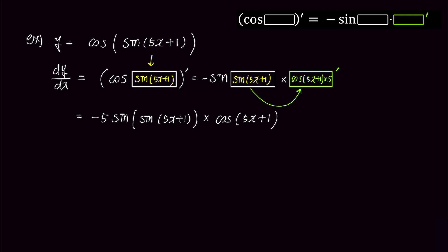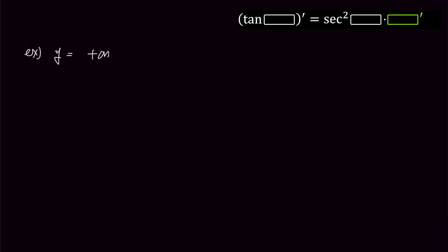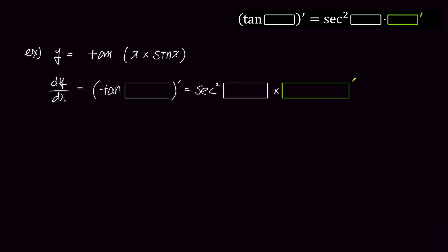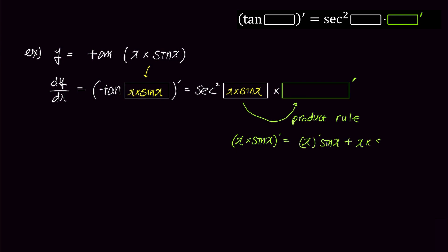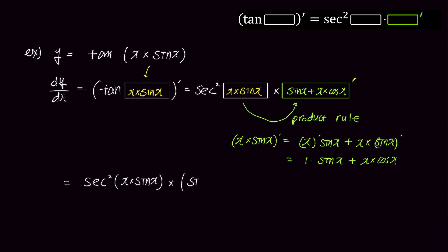In the next problem, we'll use the product rule in combination to find the solution. Let's differentiate y equals tangent of x times sin x. Since we have x times sin x inside the tangent function, we'll use the product rule. We'll put x times sin x into the box and also into the right box for secant squared. Now we need to differentiate x times sin x and put it into the box prime. Since we have two terms multiplied together, we use the product rule: the derivative of x times sin x is x prime times sin x plus x times sin x prime. The derivative of x is 1, so the first term becomes sin x and the second term becomes x times cos x. Simplifying, the answer is secant squared of x times sin x, times the quantity sin x plus x times cos x.